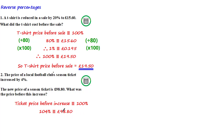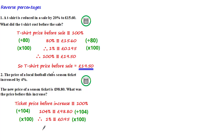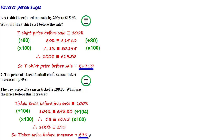Again we're trying to find what 100% is equivalent to. We can do this by first dividing both sides of the equivalence by 104, which gives us the equivalent value of 1%. Using our calculator we get that 1% is equivalent to 95p, and so to get 100% we times both sides by 100, giving us that 100% is equivalent to £95. Therefore the ticket price before the increase was £95.